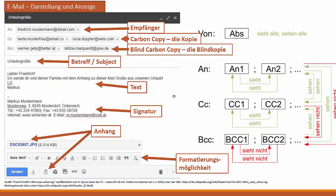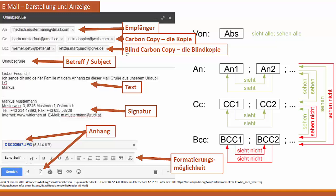Hier haben wir eine genaue Darstellung einer E-Mail. Wir haben den Empfänger und mehrere Eintragsmöglichkeiten. Wenn ich bei CC etwas eintrage – das wäre Carbon Copy –, dann wird eine Kopie an diejenigen, die dort stehen, übermittelt. Dann gibt es eine Blind Carbon Copy: auch hier wird eine Kopie der E-Mail weitergesendet.